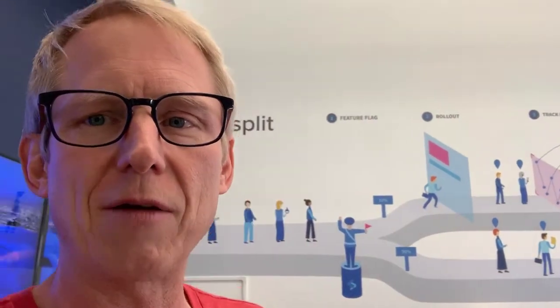I'm in the Split all-hands room here in Redwood City, and on the wall behind me is a graphic. You can see users coming along, and there's that traffic cop — that traffic cop is the feature flag. In this case, you can see that 10% of the population is being sent to a new feature — that blue box up there — and the rest are being sent around that feature. This is an example of a gradual rollout.